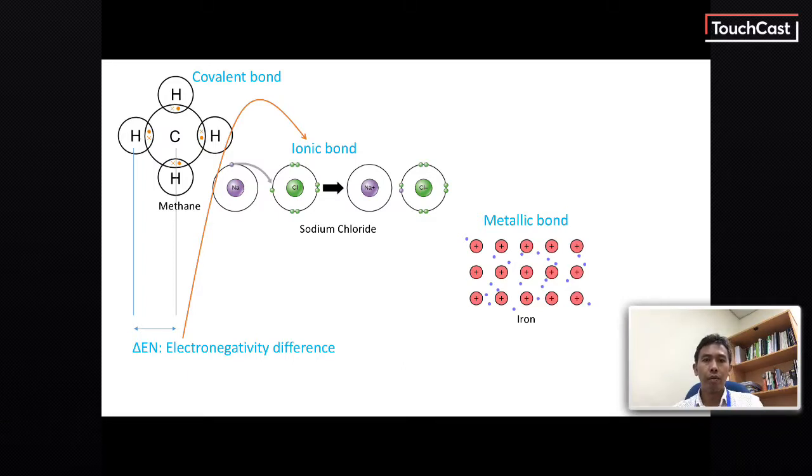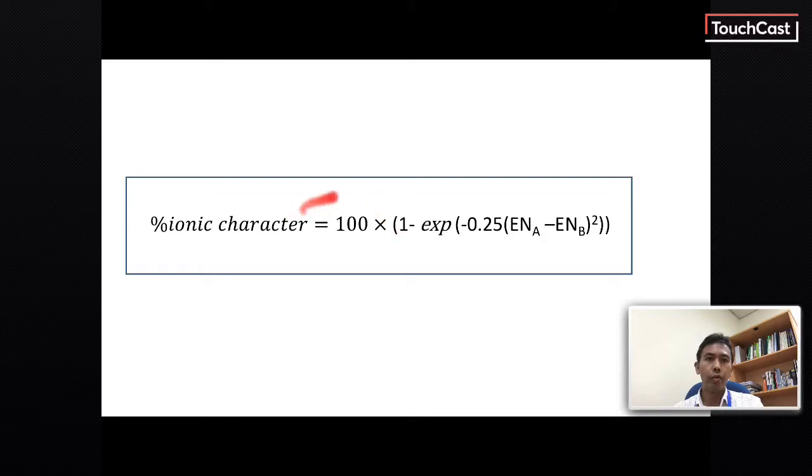If we use the following equation, percentage ionic character of a bond can be calculated, where these are the electronegativity of the two atoms. However, this equation only compares the ionic and covalent characters of the bonds. It does not account for metallic bonding.